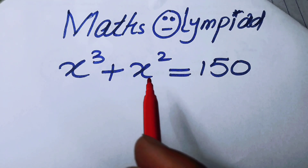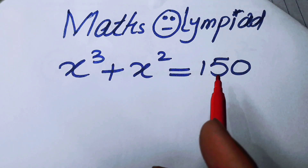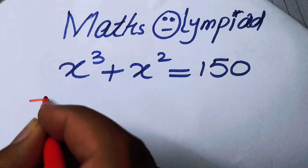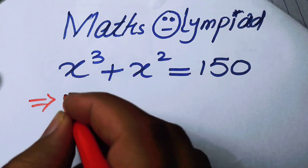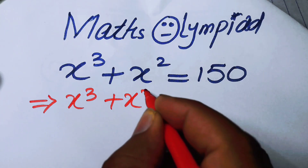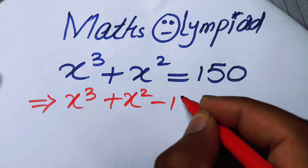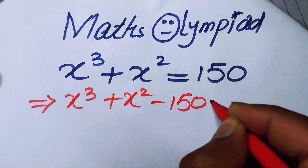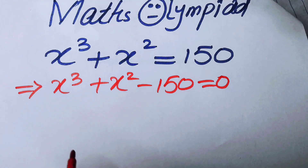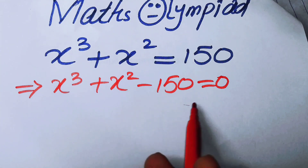The very first thing we are going to do is move 150 from the right-hand side to the left-hand side, so that it will become x cubed plus x squared minus 150 is equal to 0. After that, we will rewrite the term 150.